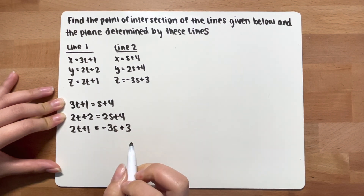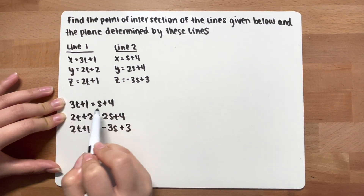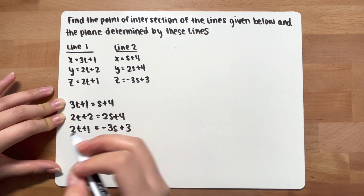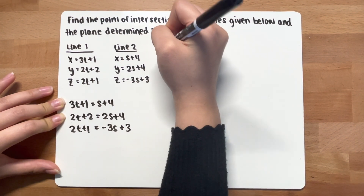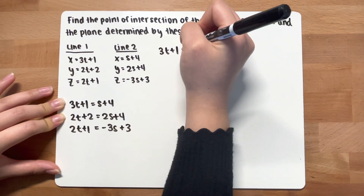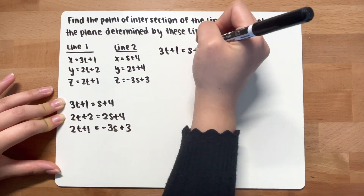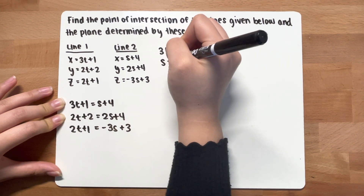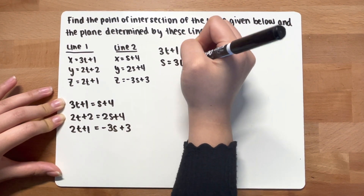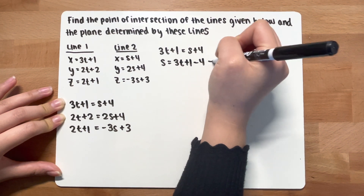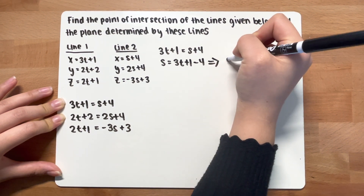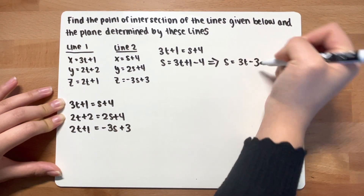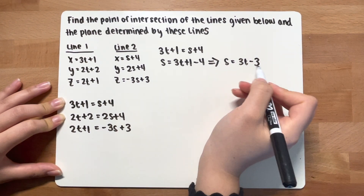Now you are going to solve for one of the variables. Let's solve for s since there's only one term for s. So from 3t + 1 = s + 4, subtract 4 on both sides. You get s = 3t + 1 - 4, which gives s = 3t - 3.